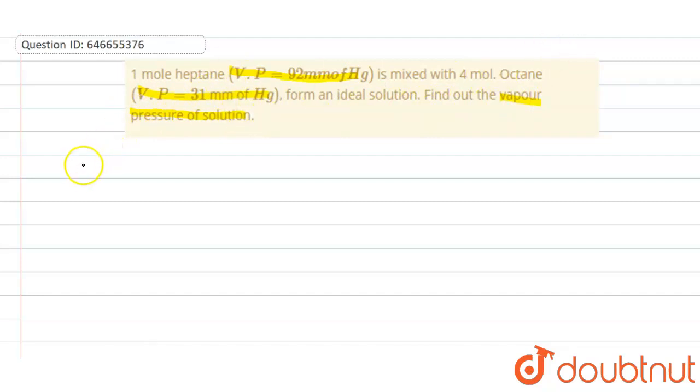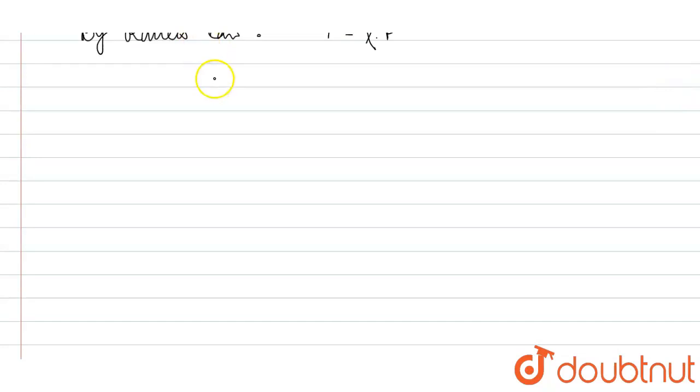Okay, so first of all, let's see by Raoult's law. By Raoult's law we know that P is equals to pressure is equals to mole fraction into vapor pressure in its pure form, right? So here let's consider heptane as A and octane as B.